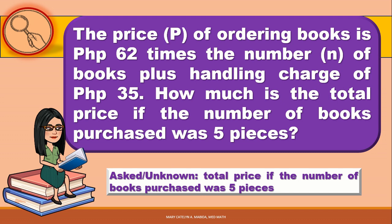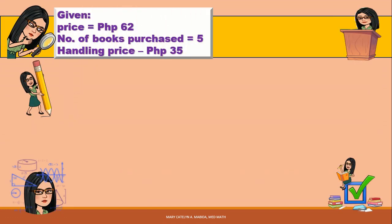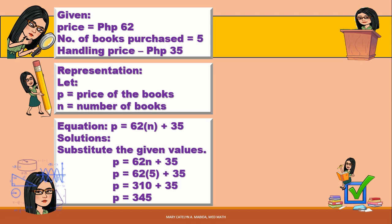First, the unknown is the total price if the number of books purchased was 5 pieces. The given are: price per book is 62 pesos, number of books purchased is 5, and handling price is 35 pesos. Let P be the price of books and N be the number of books. Our equation will be P equals 62 times N plus 35, where 62 represents the price of each book, N is the number of books purchased, and 35 is the handling price. Now let us substitute the given values: P equals 62N plus 35.